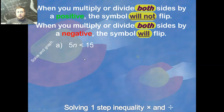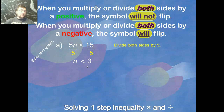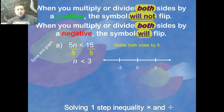Let's see some examples. 5n is smaller than 15. To get rid of the five, we divide both sides by five. We divided by a positive, so the sign does not change, and we get n smaller than 3 — because 15 divided by five is three.